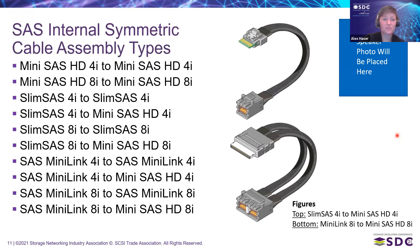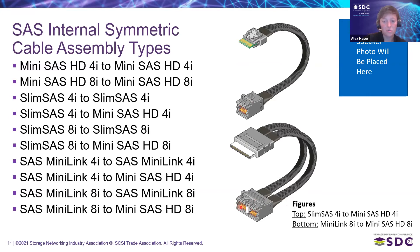For internal symmetric cable assembly types, there are a lot of different options. We've highlighted a couple here. On the top, we have a Slim SAS 4i to a Mini SAS HD 4i. And if we go to the bigger link size, we have a Mini Link 8i to a Mini SAS HD 8i. You'll notice that even though there are two separate paddle card interfaces on the Mini SAS HD side, they are contained within one housing on the connector, which is why this is listed under the symmetric cables.